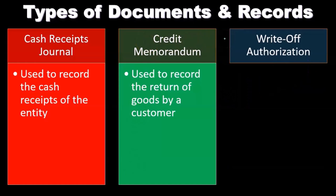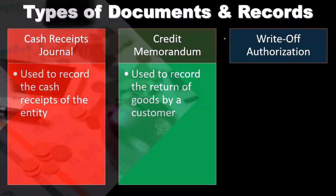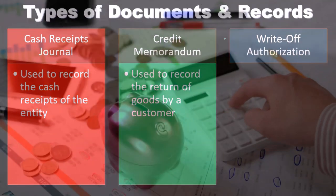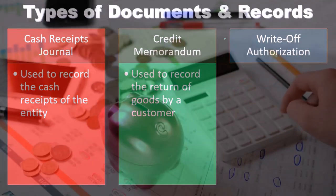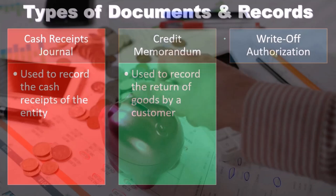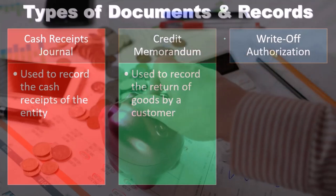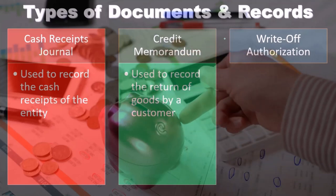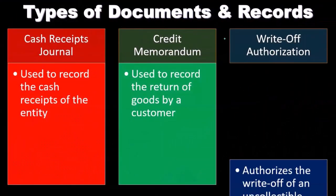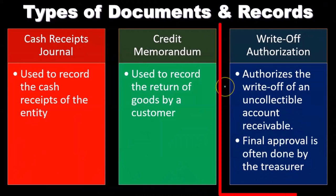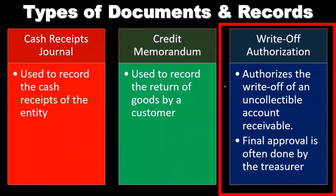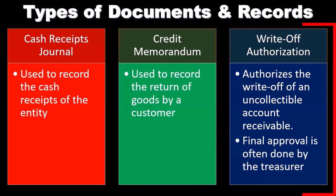Most of the time when we think about accounting, we think about the sales process, so returns can feel a bit backwards. The write-off authorization authorizes the write-off of an uncollected accounts receivable, and final approval is often done by the treasurer.